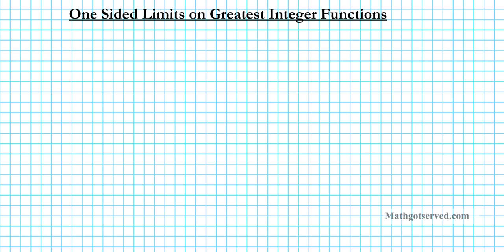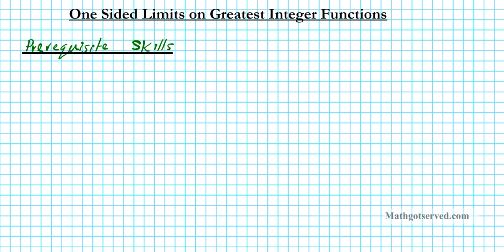We're going to start by taking a look at some prerequisite skills that you should know concerning the greatest integer function. So what are some things that you need to know in order to be able to compute one-sided limits on greatest integer functions?